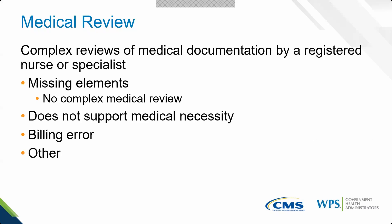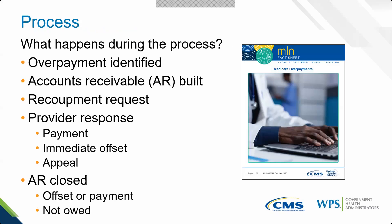What is the process to determine an overpayment? First, the overpayment is identified — this could be complex, non-complex, or an automated edit. Once the overpayment is identified, an accounts receivable, or AR, is built in HIGLAS — the Medicare accounting system. Once the AR is built, that starts the clock. Then a recoupment request letter is sent.